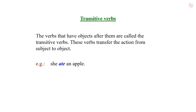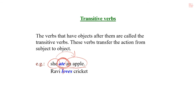Let us see the example. She ate an apple. She is the subject, and an apple is the object. The verb 'ate' transfers the action from subject to object. That's why this is called a transitive verb. A transitive verb must have an object. See another example: Ravi loves cricket. Here, subject Ravi is there and object cricket is there. 'Loves' is the verb. It has an object, that's why it is called a transitive verb.